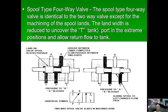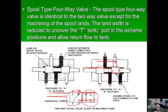Looking at another spool-type 4/2-way valve: in the right position, P is open to A and both B and T are closed because the spool blocks them. In the left position, the spool blocks A and T, so flow goes from P to B. Note there are two T ports on the physical spool, but in the schematic diagram they are shown as one T.